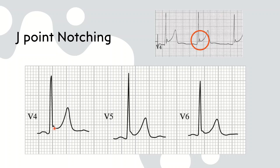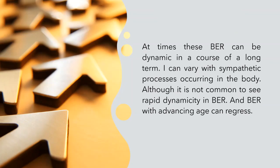So at times these benign early repolarizations can be dynamic in the course of a long term and it can vary with sympathetic processes occurring in the body, like the change in the rate. Although it is not common to see rapid dynamicity like in acute coronary syndromes in benign early repolarizations, these changes can pretty much regress when there is an advancing of age.